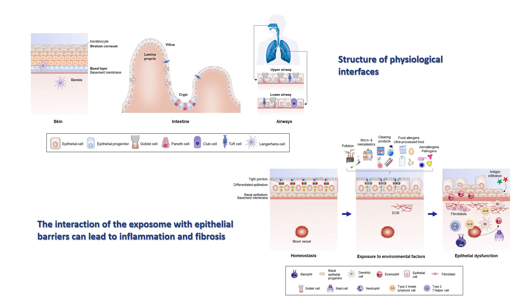If the exposure to these exposome components continues, we will find additional fibrosis, proliferation of fibroblasts, and in the epithelium we will find acanthosis, undifferentiated epithelial cells, thickening of the basement membrane, and ultimately a recruitment of hematopoietic cells like innate lymphoid cells, lymphocytes, granulocytes, or dendritic cells.